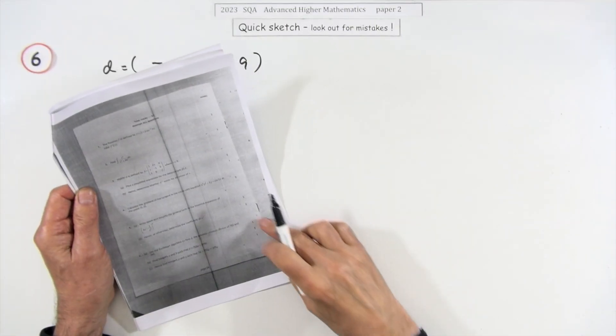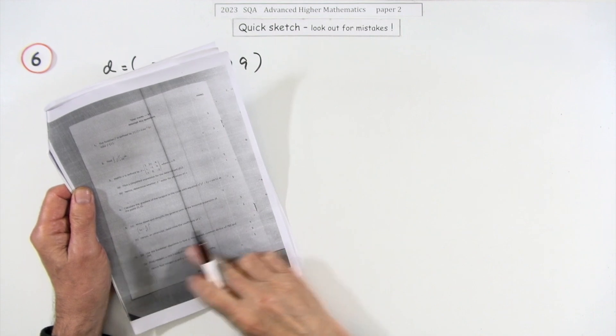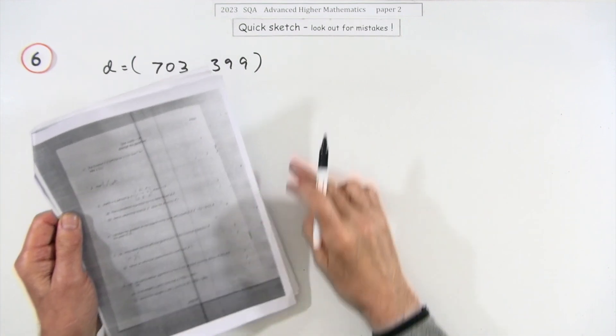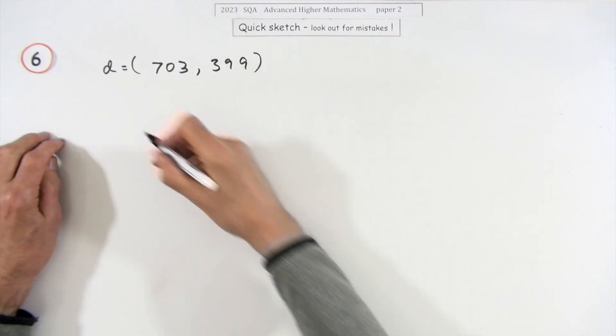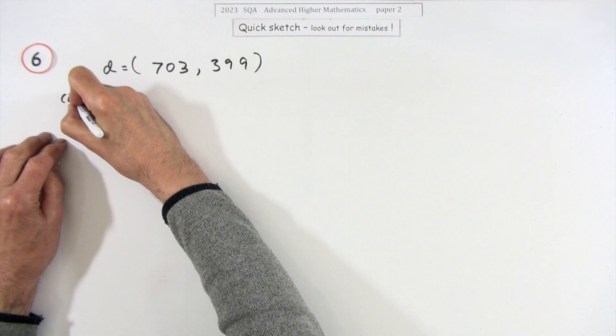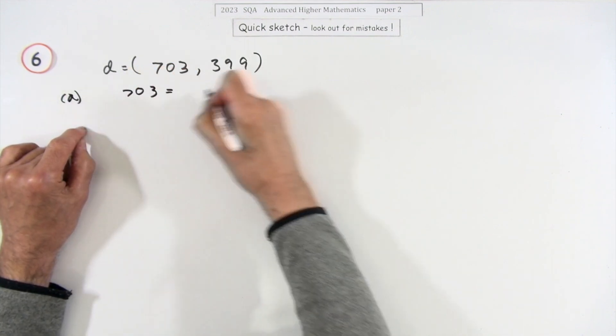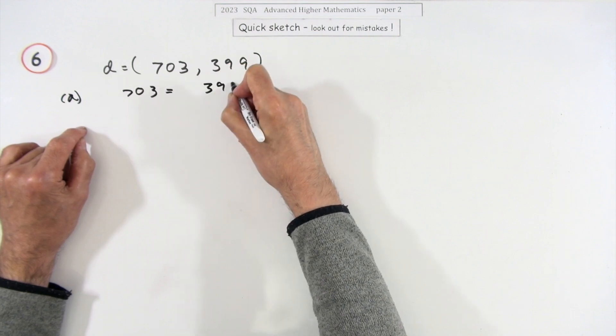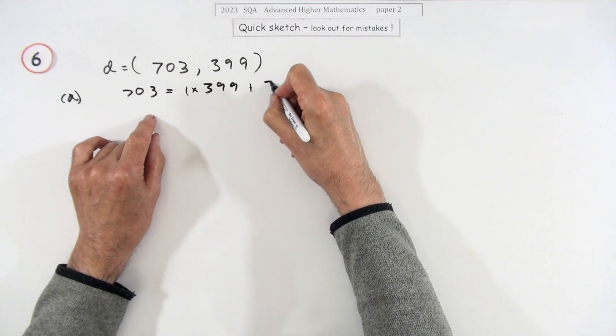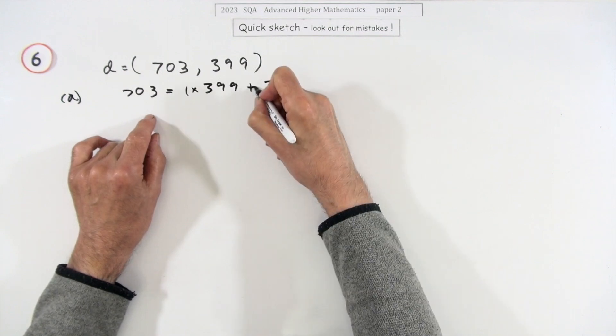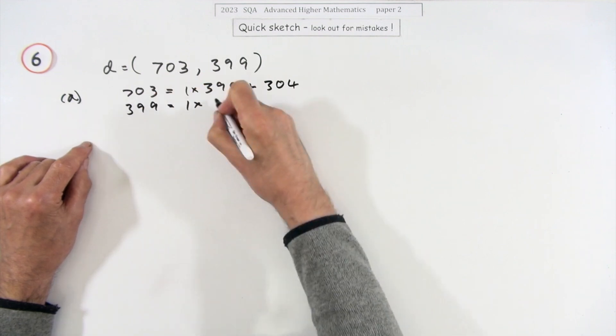So to number six, four marks. Use the Euclidean algorithm in part a for one mark to find the greatest common divisor of these two numbers, one mark. Right, well 703, that doesn't go in, well it does go in, doesn't go in exactly I mean, so it'll be one of them and 304 left over.